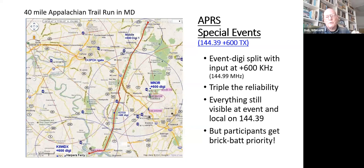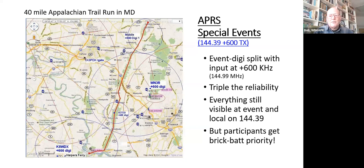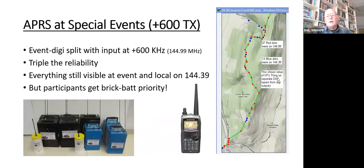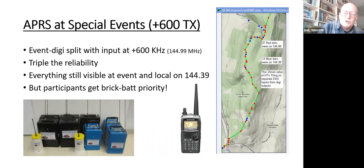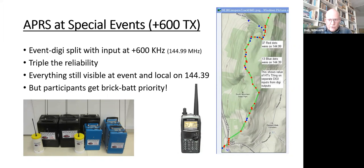Users at the event transmit with their radio set to plus 600 standard offset, and now those digipeaters only hear event participants on input — but the output is on 144.39. Comparing results: someone went along the trail first transmitting on 144.39 — those are the blue dots. All position reports received via the 600 kHz offset are shown in red, and it's about three times as many. So you vastly improve your special event operation by switching local digipeaters to a plus 600 offset.